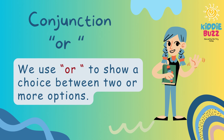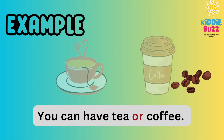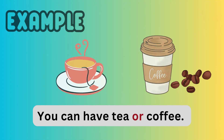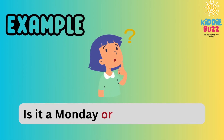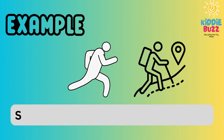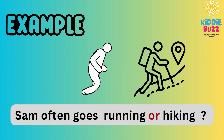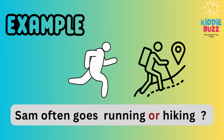We use OR to show a choice between two or more options. For example, 'You can have tea or coffee.' The options are tea and coffee, connected by the conjunction OR. Another example: 'Is it a Monday or Sunday today?' The options are Monday and Sunday, connected by OR. Also, 'Sam often goes running or hiking' — the two words running and hiking are connected using OR.